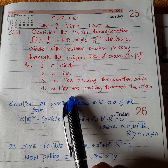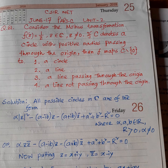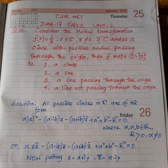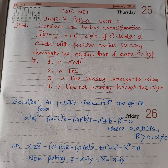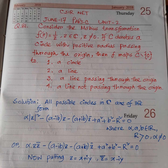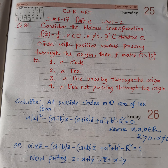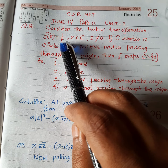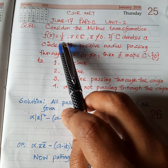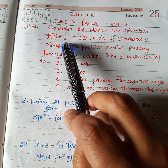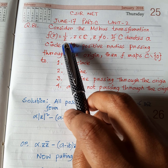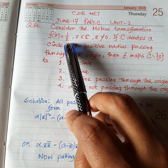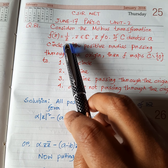The options are: a circle, a line, a line passing through the origin, or a line not passing through the origin. Before we go to the solution, we can refer to a proposition. If we go to the book 'Foundation of Complex Analysis' by Kunasami, there is a proposition about this Möbius transformation f(z) = 1/z in the finite complex plane. This particular transformation is also known as inversion.